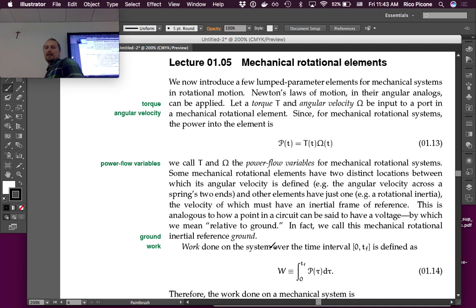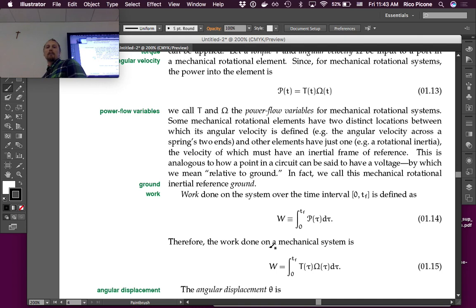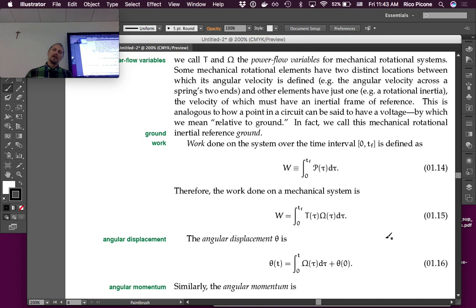In fact, we call this mechanical rotational inertial reference ground. Work done on the system over a time period is just the integral of the power over that time period, and you can substitute in for the power just the product of torque and angular velocity, so we can compute the work from those two quantities.